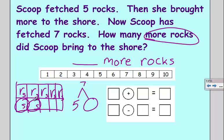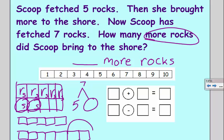Another way I could do it is I could draw linking cubes. I have five. So I'm going to draw five cubes together. That's what I started with. And I ended with seven. So I'm going to draw seven linking cubes. And again, I can see that my difference is two more rocks.